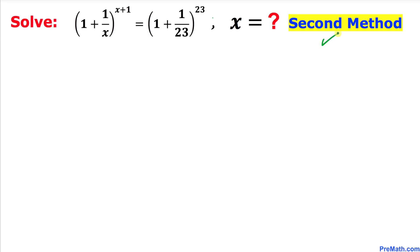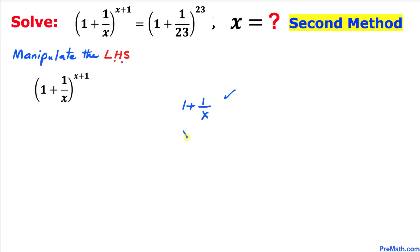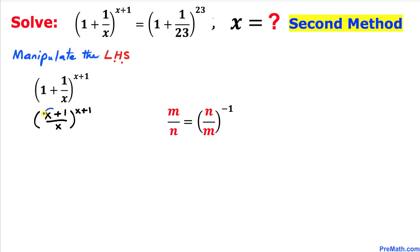Now let's look at Method 2, where we manipulate the left hand side. We focus on the part inside the parenthesis: 1 + 1/x. Simplifying, this can be written as (x + 1)/x. So I am going to replace that expression, giving us ((x + 1)/x)^(x+1).